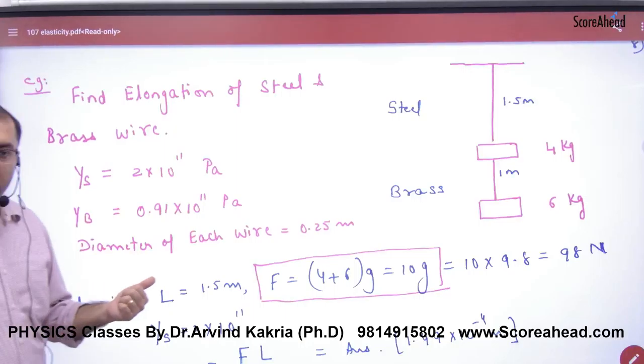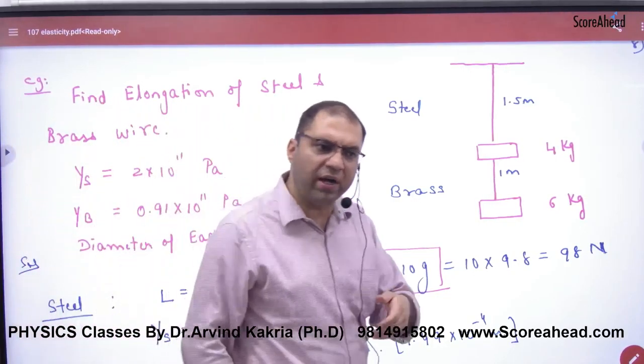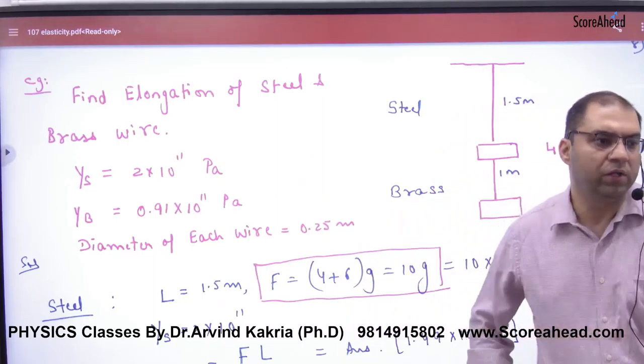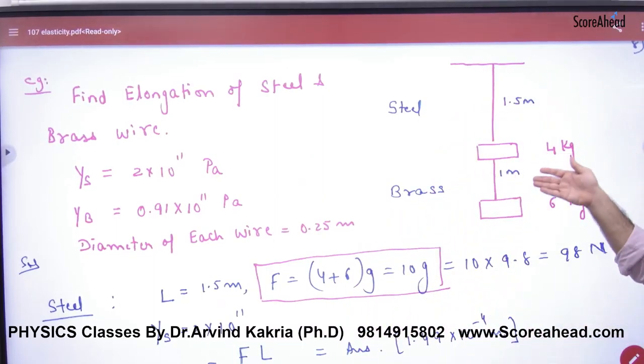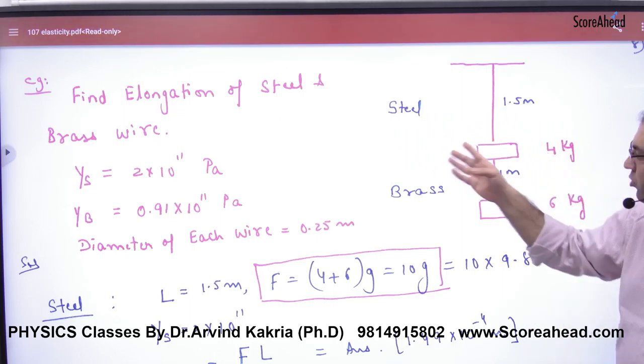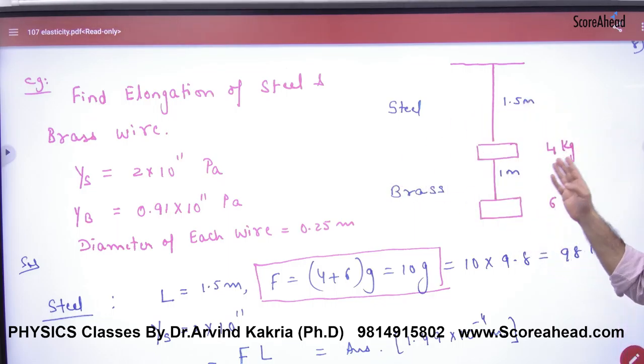This is also a problem from NCERT and it comes in school because this is a solid mechanics problem in NCERT. So what will be given in this? You will have two wires, steel and brass, and two blocks of steel, 4 kg and 6 kg. Steel will be given Young's modulus and brass will also be given Young's modulus.